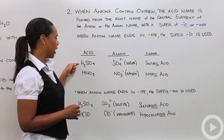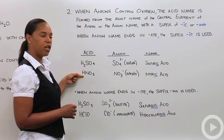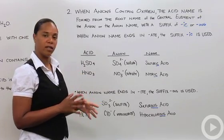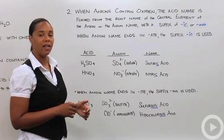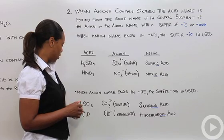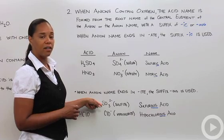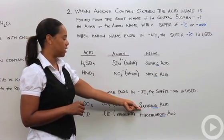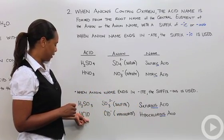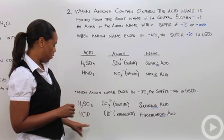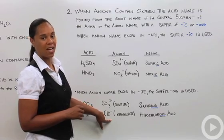The last part of this rule is that when your anion name ends in -ite, the suffix -ous is used. A couple of examples: H2SO3, for which the anion is SO3²⁻—we name that sulfite, so then the acidic form of H2SO3 is sulfurous acid. And then last but not least, HClO—this is chlorine and one oxygen, which has the anion ClO⁻, which is hypochlorite, and so that gives us hypochlorous acid.